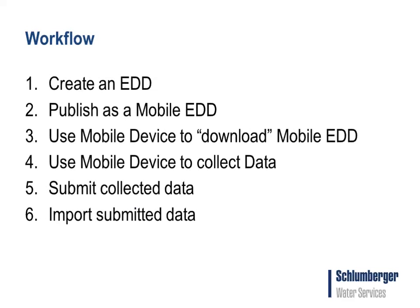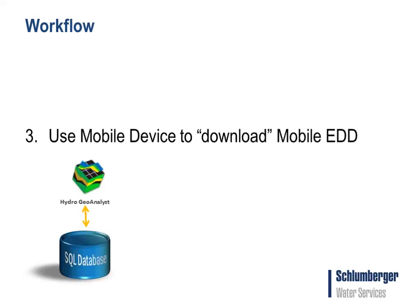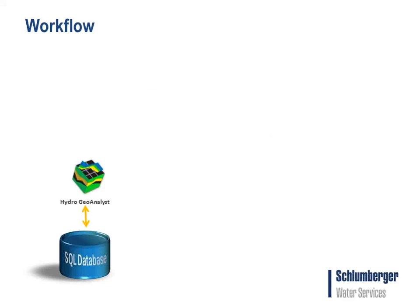The workflow for using the mobile EDDs within HGA has six steps. You create your EDD, publish it, download it to your mobile device, use your device to collect the data, submit the collected data, and then import the submitted data. Let's look at it in a generic workflow diagram.